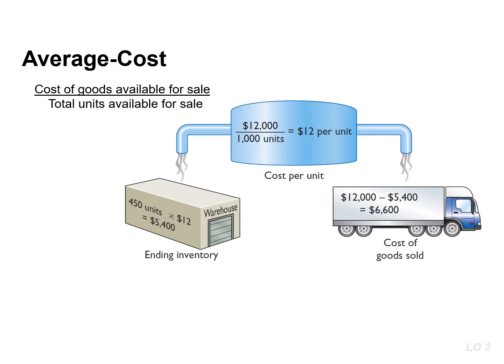We can verify the cost of goods sold of $6,600 by multiplying the 550 units sold times the weighted average unit cost of $12, arriving at a cost of goods sold of $6,600.